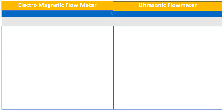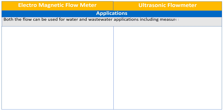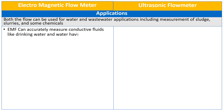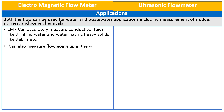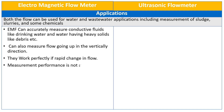Let us see the applications of electromagnetic and ultrasonic flow meters. Both flow meters can be used for water and wastewater applications, including measurement of slurries and some chemicals. The electromagnetic flow meter can accurately measure conductive fluids like drinking water and water having solids like debris. It can also measure flow going upward in the vertical direction. It works perfectly if there is a rapid change in the flow, and its measurement performance is not affected by the temperature, pressure, or viscosity of the fluid.